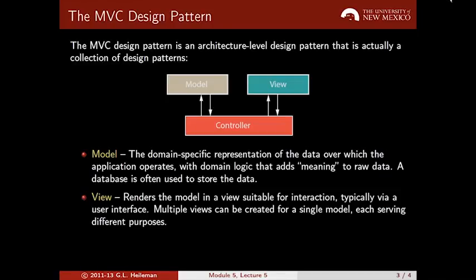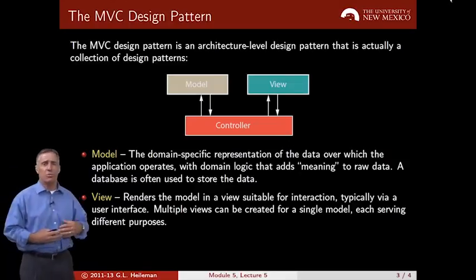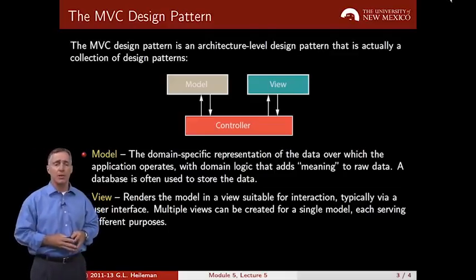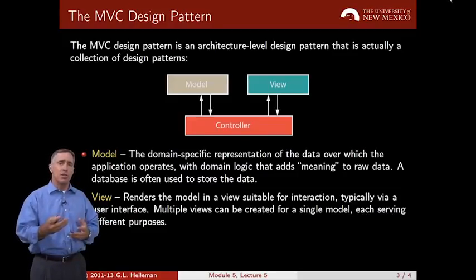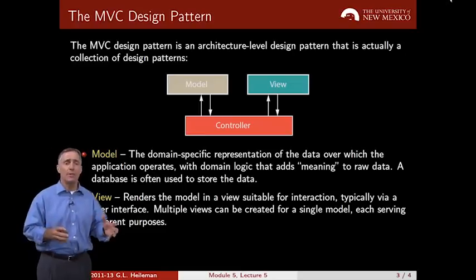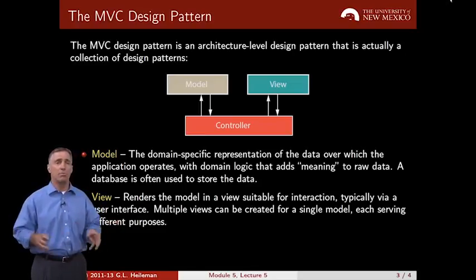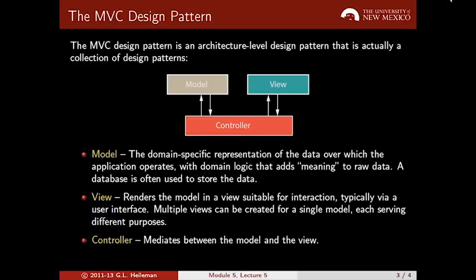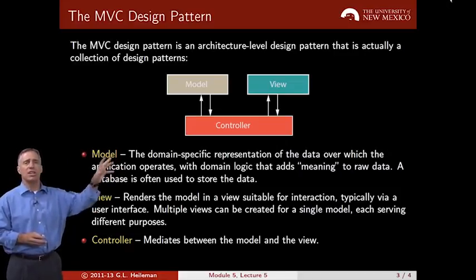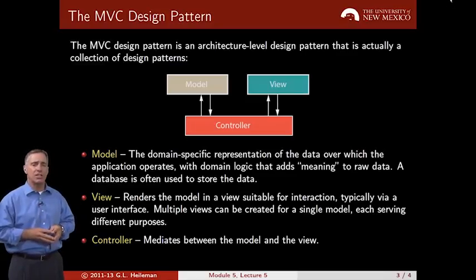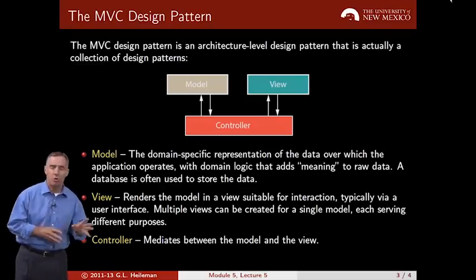The view is used to render the data that's in the model. Typically it's a view suitable for interaction — you put links on a page, for example — and it's in the form of some type of user interface. The nice thing about separating presentation from data is that you can have multiple views for the same data depending upon the user, or update the view as the application changes. The controller mediates between the two, and in Rails it's the controller that does most of this mediation.